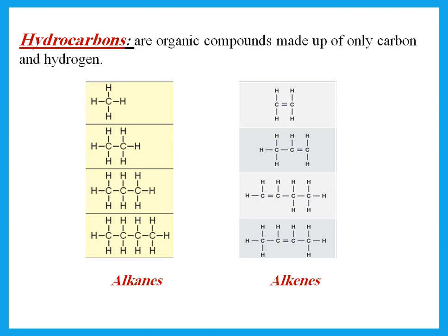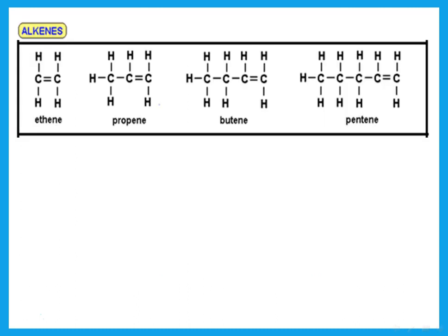These groups are called homologous series. Hydrocarbons contain only carbon and hydrogen — you must say 'only.' Alkanes and alkenes are the two homologous series that are hydrocarbons. A homologous series means a group of organic compounds. All alkenes form one homologous series.